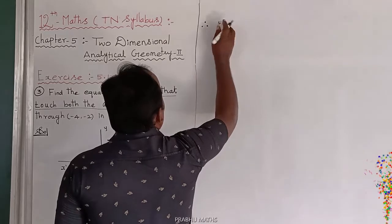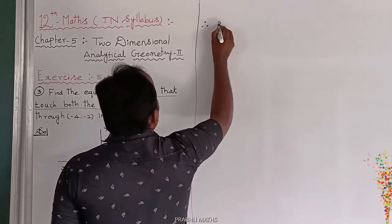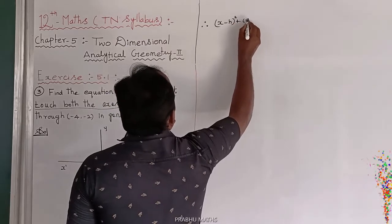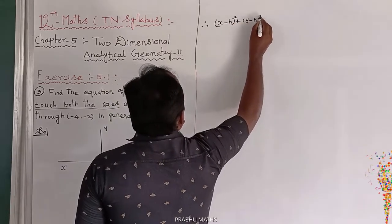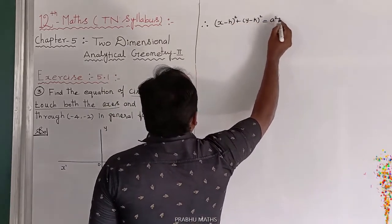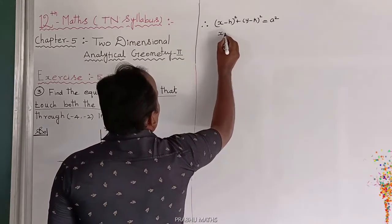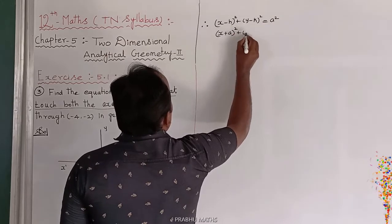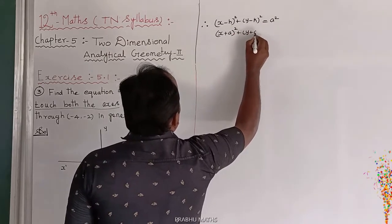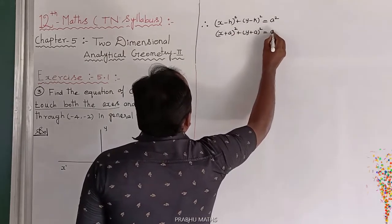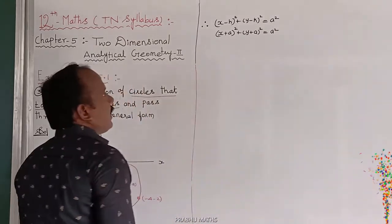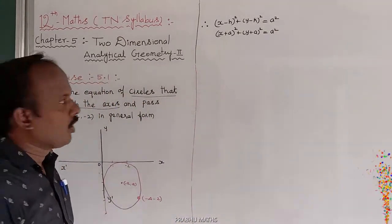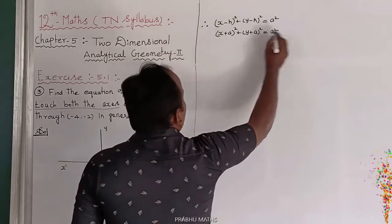The standard form is: x minus h whole square plus y minus k whole square equals r squared. Substituting, we get x plus a whole square plus y plus a whole square equals a squared. That is the general form for this circle.